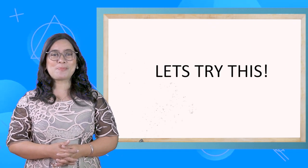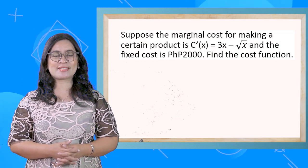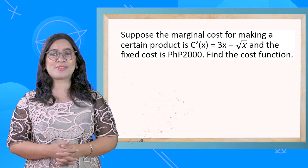Let's try this. Suppose the marginal cost for making a certain product is C'(x) = 3x - √x, and the fixed cost is 2,000. Find the cost function.